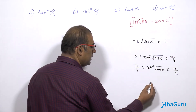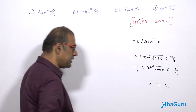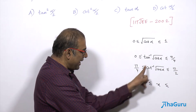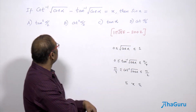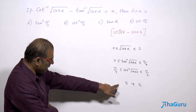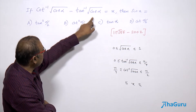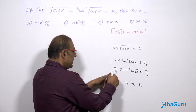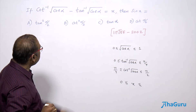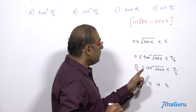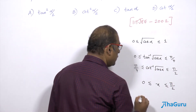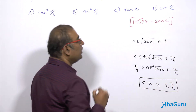So this difference is your x. The minimum of cot⁻¹ minus the maximum of tan⁻¹ gives the lower bound, and the maximum of cot⁻¹ minus the minimum of tan⁻¹ gives the upper bound. The minimum of cot⁻¹ is π/4, maximum of tan⁻¹ is π/4, so the lower bound is 0. The upper bound is π/2.